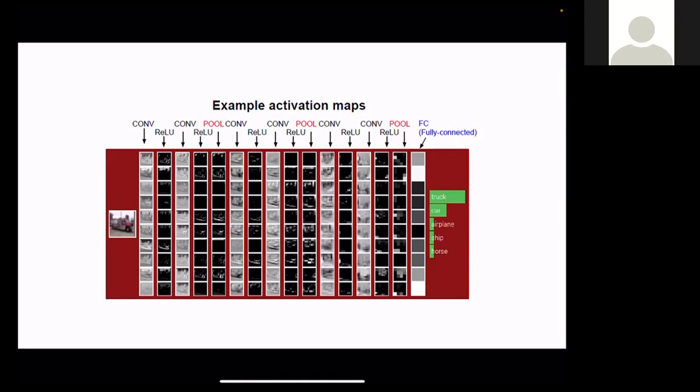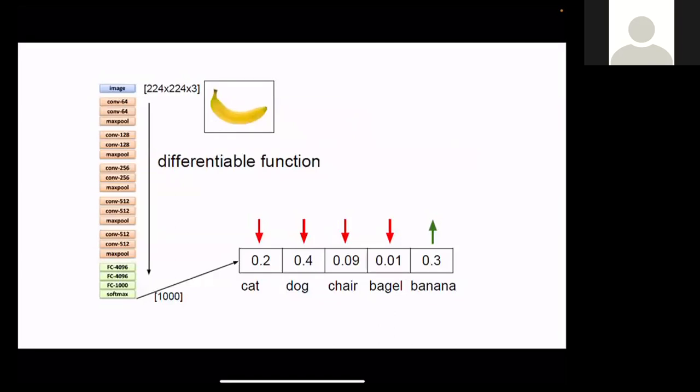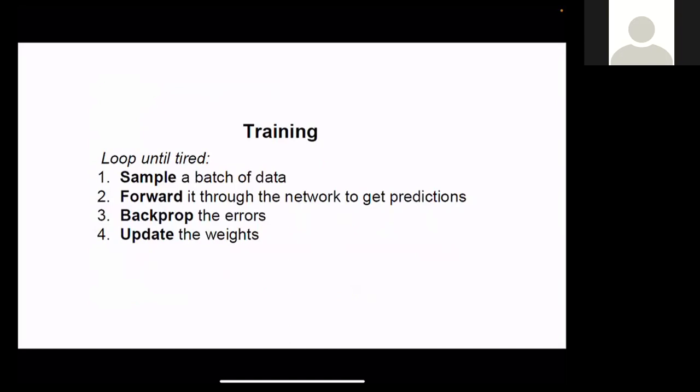There are some problems when training such a deep network. While the same backpropagation is used, because the network is deep, many gradient values become extremely small or extremely large — called the vanishing gradient or exploding gradient problem. One solution is to replace the sigmoid activation function with a rectified linear unit, or ReLU, so that this problem doesn't occur.